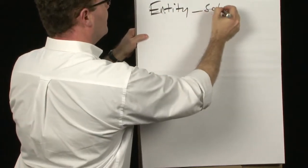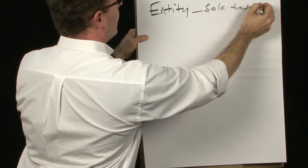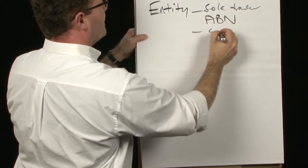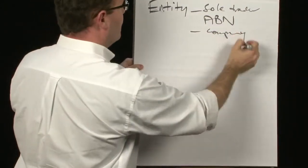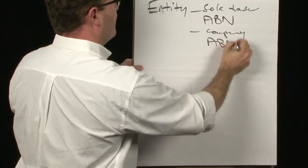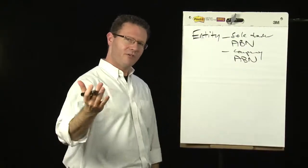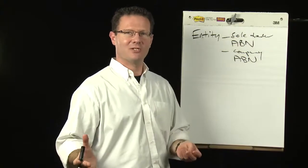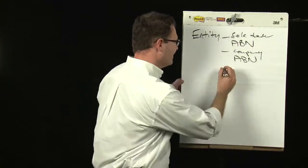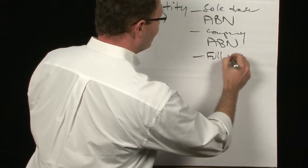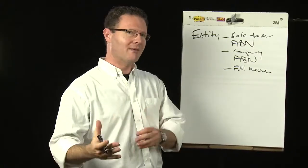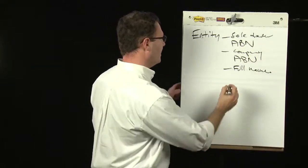It can be a sole trader, in which case you want an ABN. If it's a company, you want an ABN. If you're working for a person, can you get their last name? I mean, how much of a stretch is that? Could I have your surname please? Full name. If it's a partnership, the full names of all the partners in the partnership.